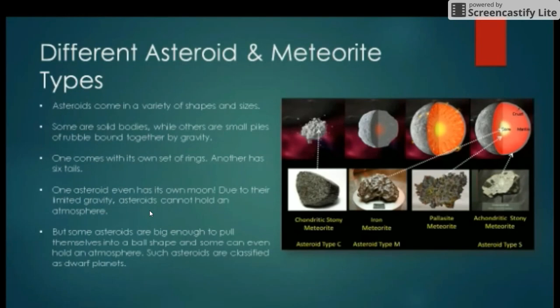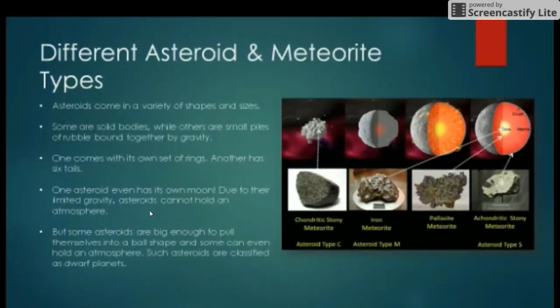Due to their limited gravity, asteroids cannot hold an atmosphere. But some asteroids are big enough to pull themselves into a ball shape, and some can even hold an atmosphere. Such asteroids are classified as dwarf planets.